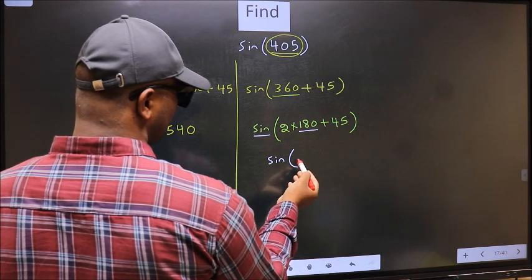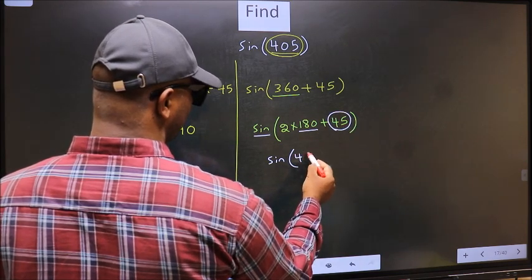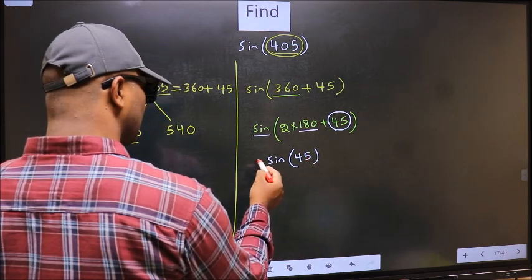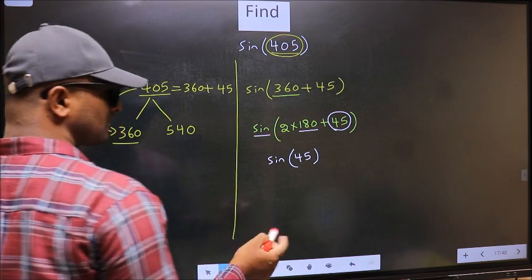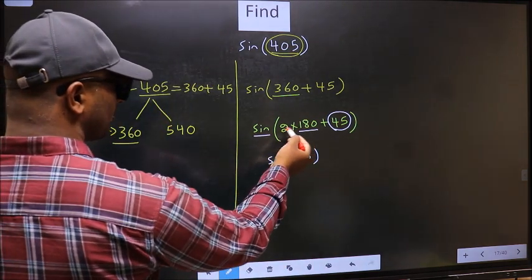It will remain sin, and inside we get this angle 45. Now the question is: will we get here plus or minus? To answer that, we should look at the number before 180.